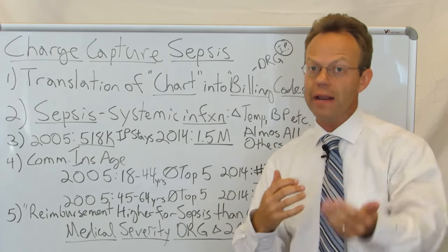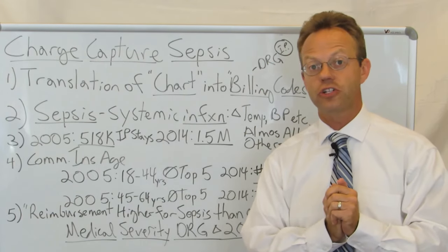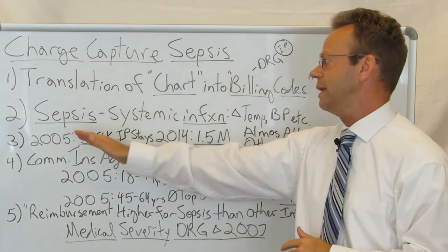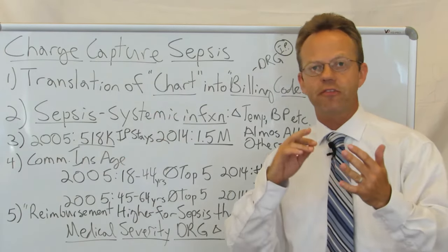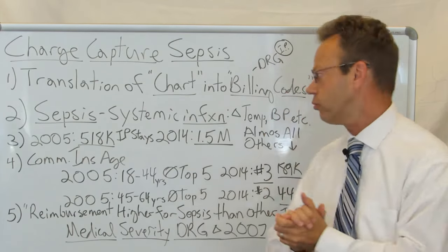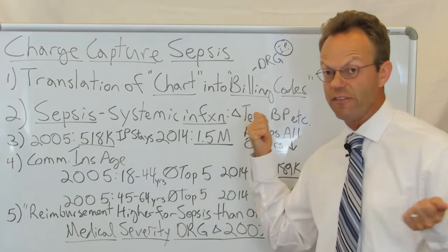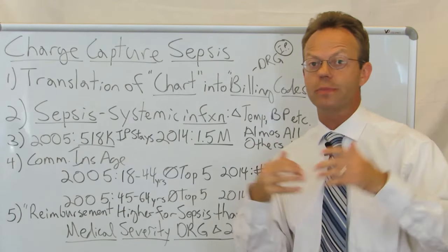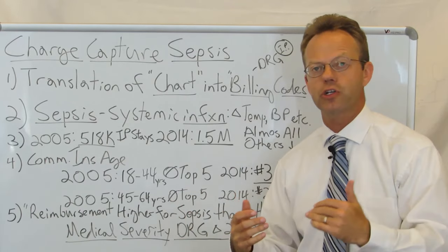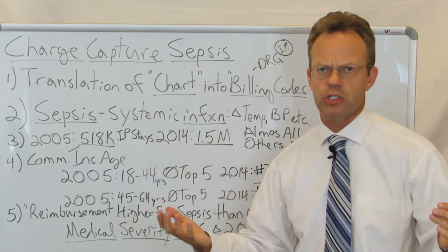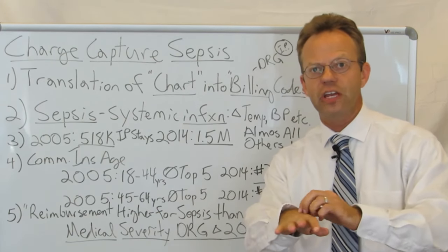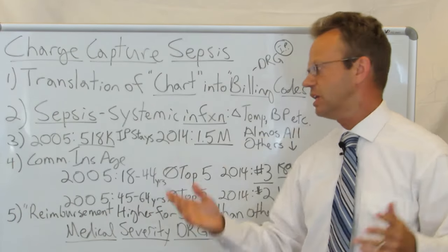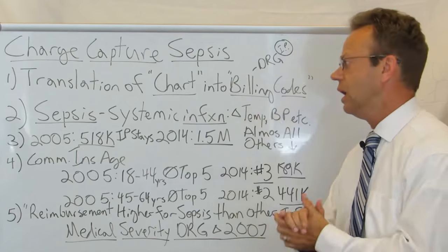DRG codes are used for inpatient stays and form the basis for Medicare reimbursement as well as commercial insurance reimbursement. Sepsis is a systemic infection — typically bacterial, but could be fungal or viral — that causes fever, temperature changes, and potentially very low blood pressure requiring intensive care with fluids and special medications. A minor skin infection or bladder infection historically was not considered sepsis because it wouldn't produce these dramatic systemic effects. In 2005, there were 518,000 inpatient stays for sepsis across all age groups.